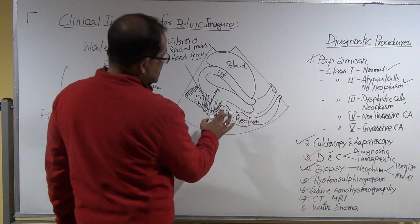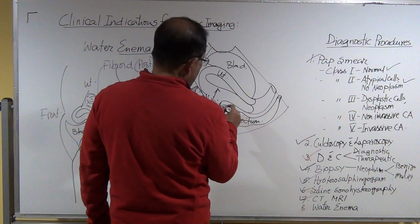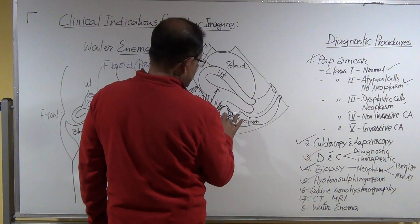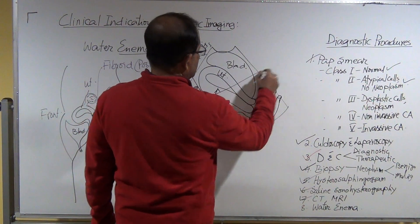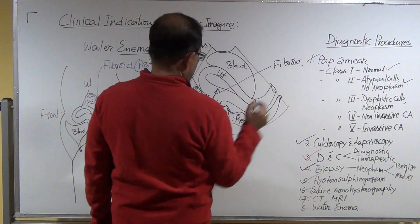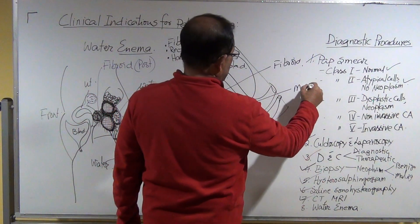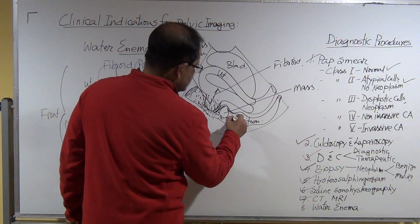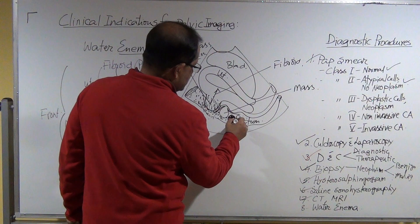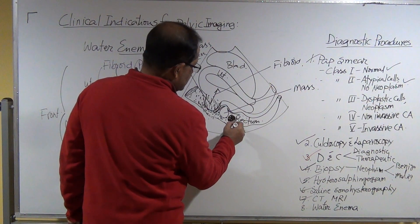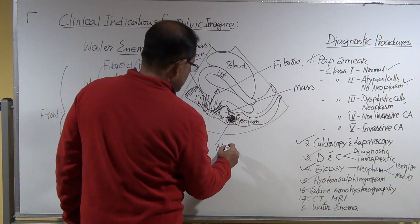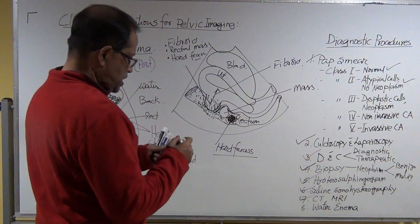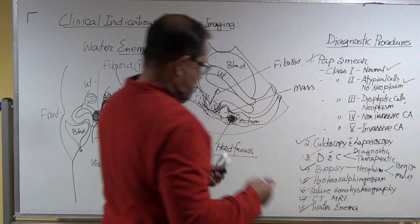Enema will go, and if there is a mass inside the rectum you will say this is a mass — this is a fibroid and this is a rectal mass. And if this is hard feces, in that way you can differentiate each other, and water enema is done.